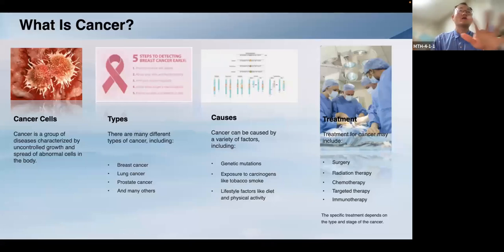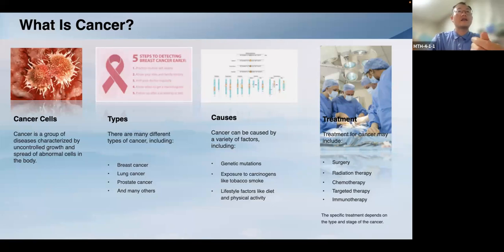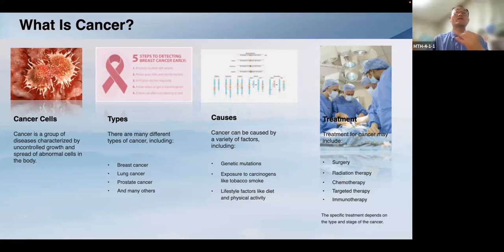First, I will briefly explain cancer. Cancer is a disease characterized by abnormal and uncontrolled proliferation of cells. This disease occurs in many places and has many types. Causes include lifestyle, diet, physical activity, and environmental factors such as smoking. Treatment is mainly through surgery.